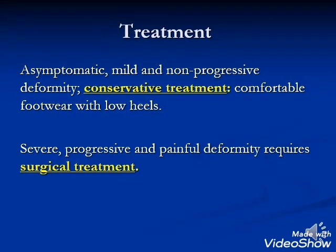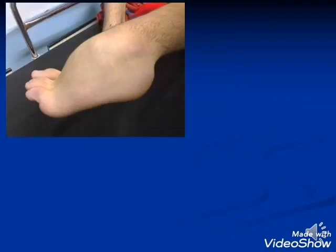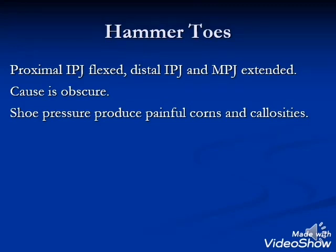Treatment: asymptomatic and mild non-progressive cases — conservative, with comfortable footwear with a low heel. Severe, progressive, and painful deformity requires surgical correction. Claw toe: interphalangeal joints are flexed and metatarsophalangeal joints are in extended position, usually seen in poliomyelitis and rheumatoid arthritis, sometimes idiopathic. Hammer toe: the proximal interphalangeal joint is flexed while the distal interphalangeal joint and MTP joint are extended; the cause is obscure.